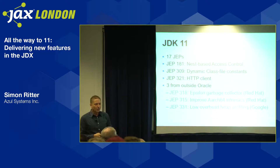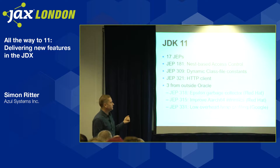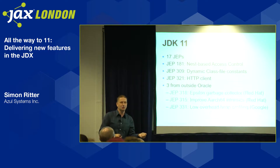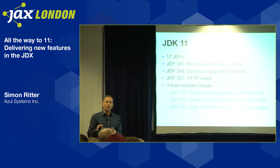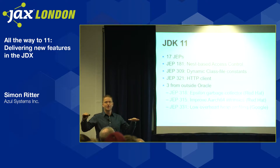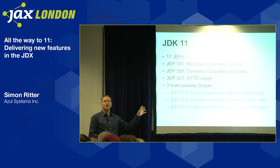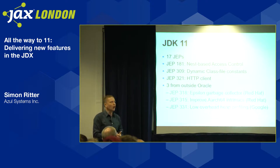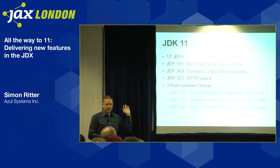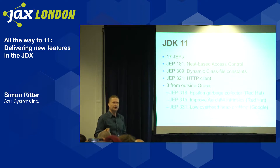Three JEPs were contributed from outside Oracle. The Epsilon Garbage Collector from Red Hat is a GC that doesn't collect garbage — useful for testing GC algorithms by benchmarking with no collection as a baseline, and also for very short-lived microservice or Lambda-type tasks where GC may not be needed. Red Hat also contributed improved intrinsics for ARM64. And interestingly, Google is back in the Java game, contributing the low-overhead heap profiling API.